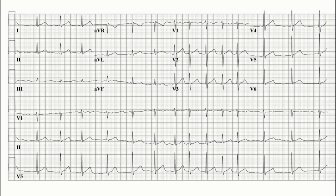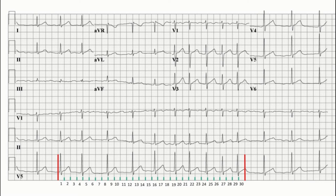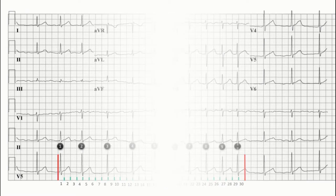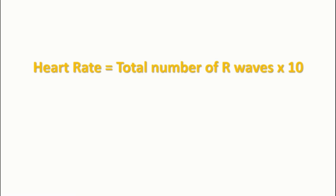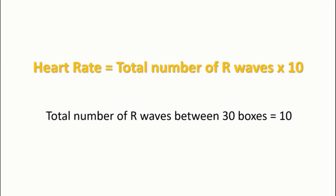There are 3 rhythm strips in this ECG and we can use any one of them as they have exactly the same timings for all events. First, we mark 30 boxes over one of the rhythm strips — we can start from any place. Now after marking the boxes, we count the total number of QRS complexes or simply R waves between our marked 30 boxes. We can see that there are 10 R waves between our 30 boxes. According to the 6-second rule, heart rate equals the total number of R waves between 30 large boxes multiplied by 10. In our case, the total R waves are 10, and hence the heart rate will be 100 beats per minute.